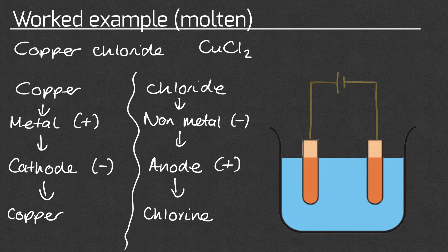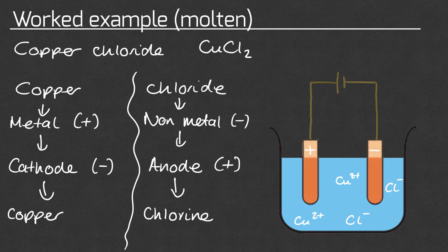Note that we started off with a chloride ion but we make chlorine gas — just like if we had bromide we'd make bromine gas, or if we had oxide we would make oxygen gas. I've labelled the diagram with a positive and negative electrode, and added some copper ions in the solution and some chloride ions. The copper ions would move to the negative electrode, and the chloride ions would move to the positive electrode.